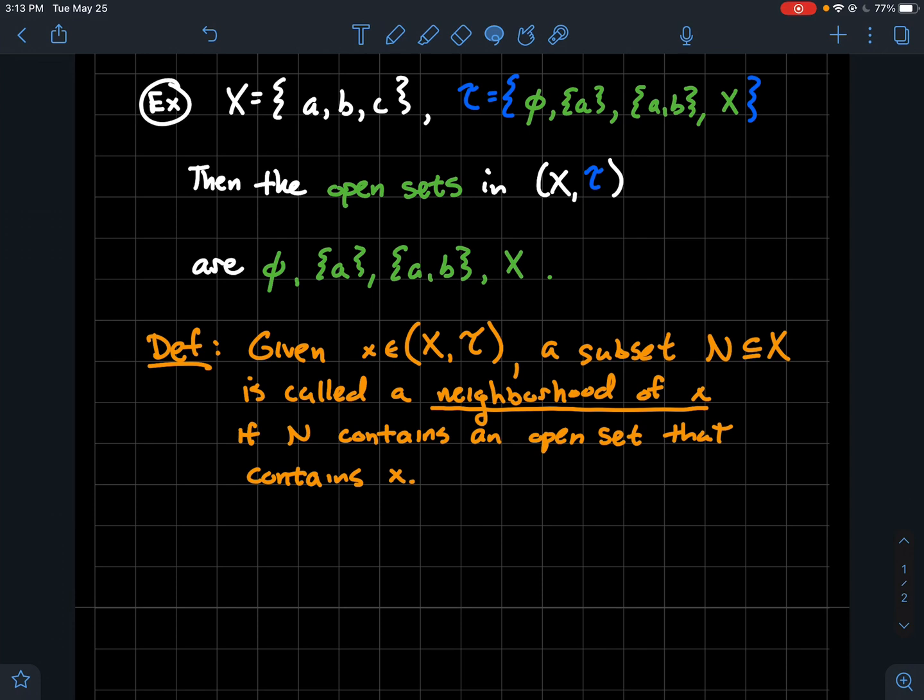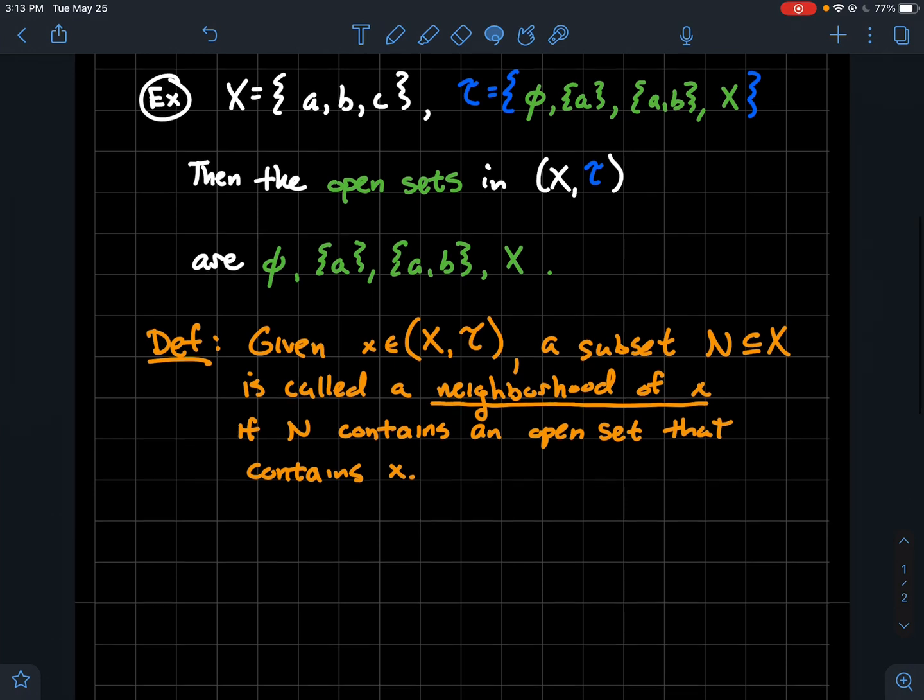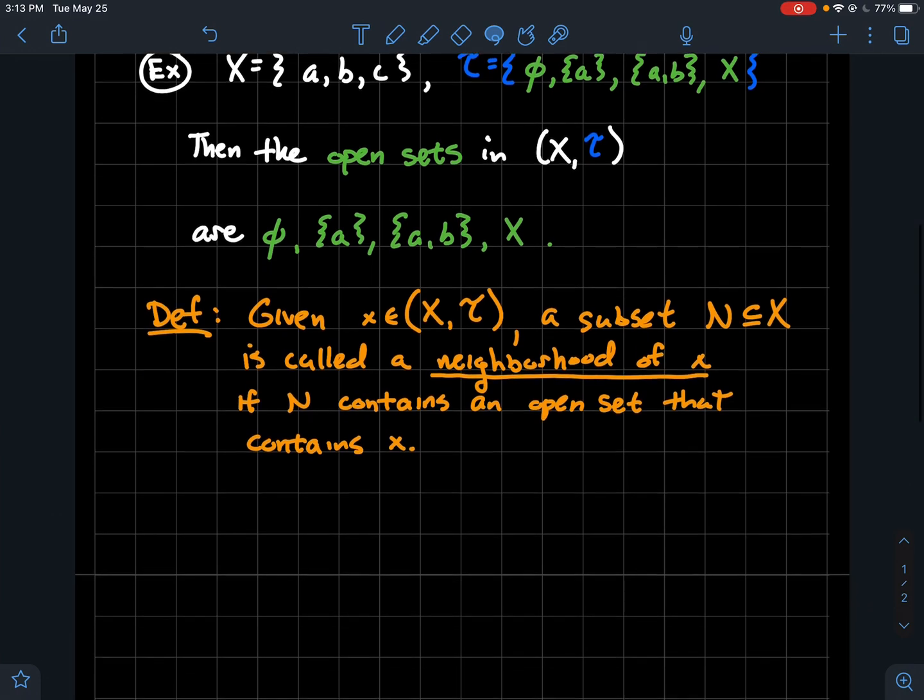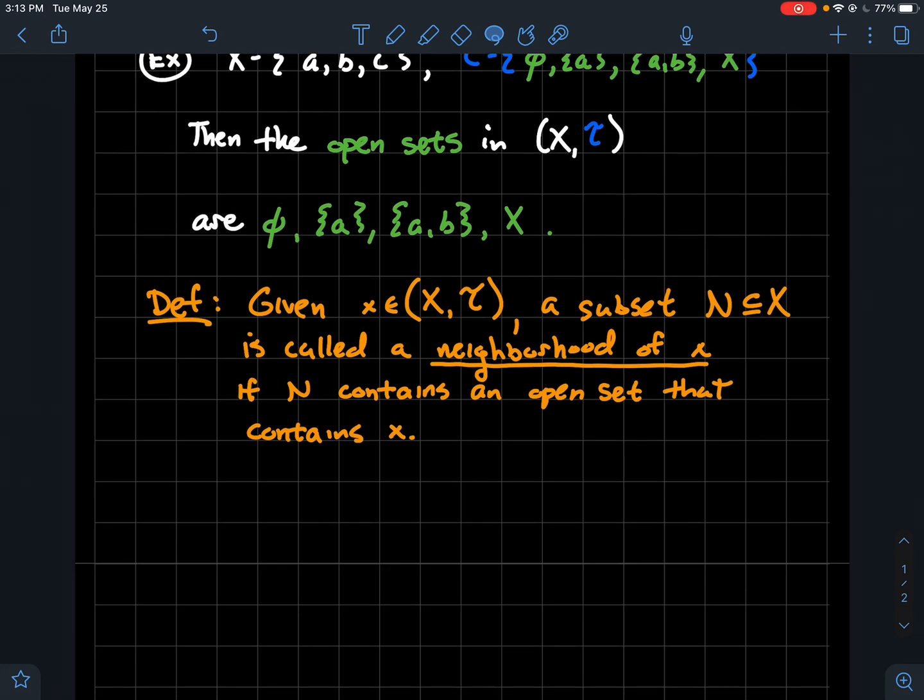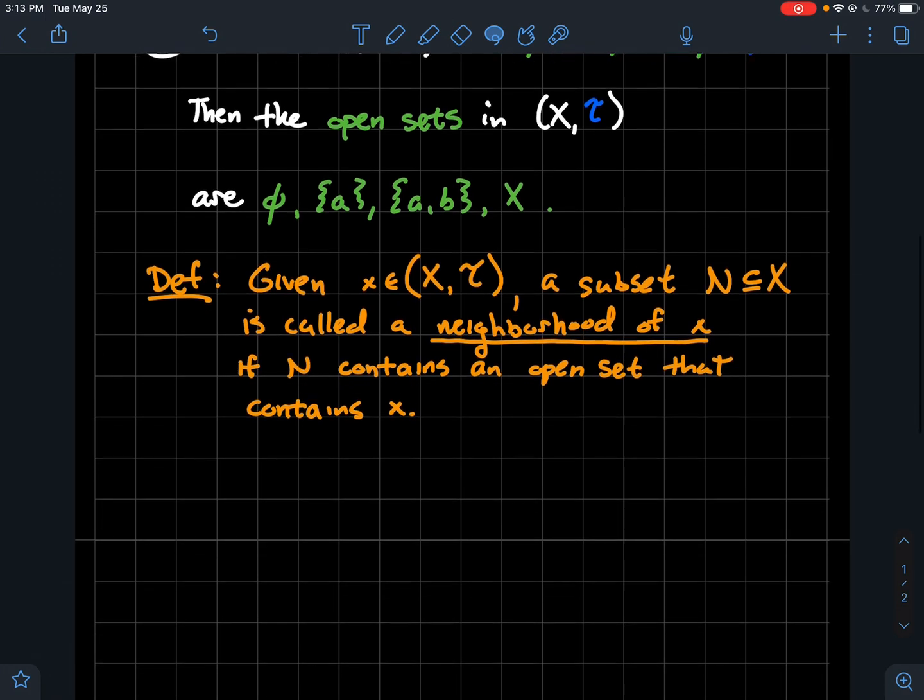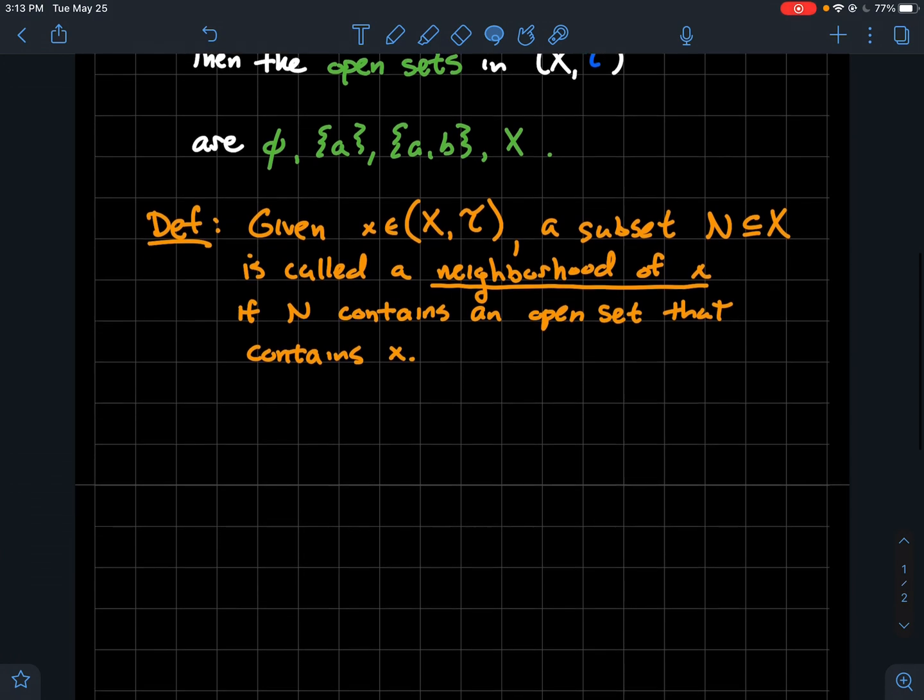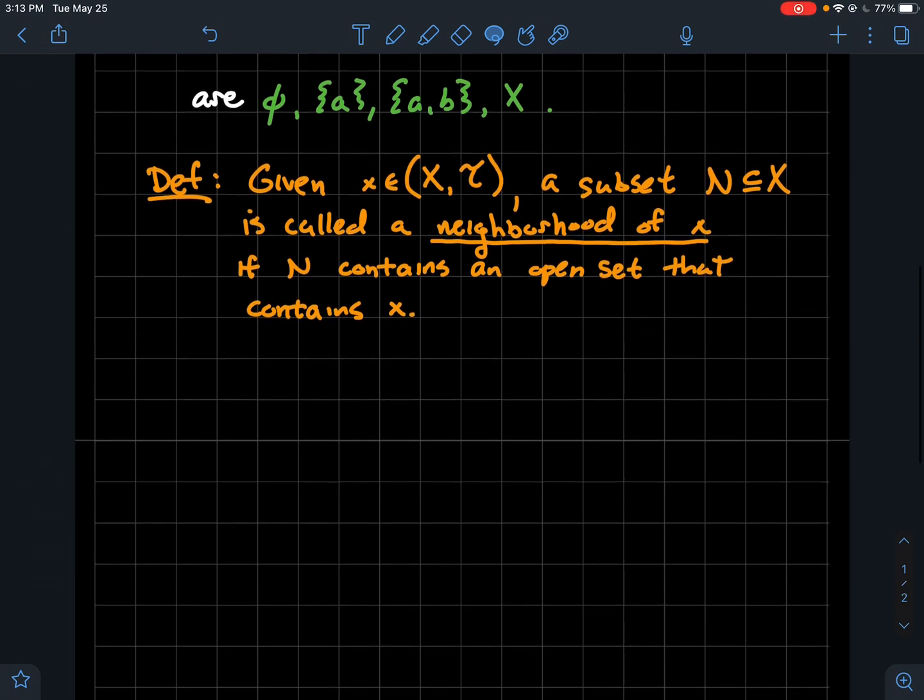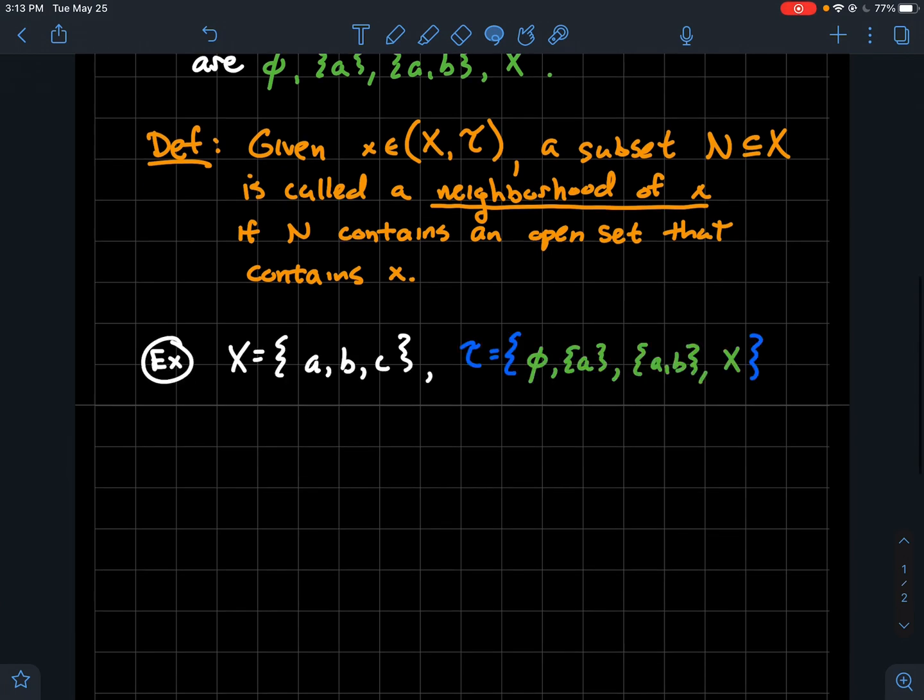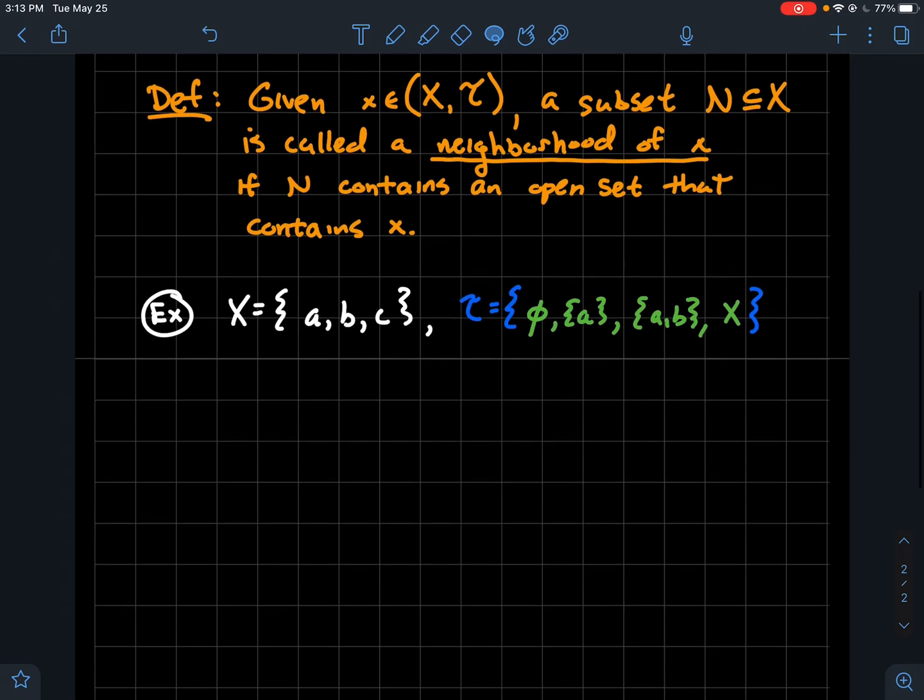So here's kind of the new definition. So that should be old news if you've made it this far. So the new definition is if you're given a point in your topological space, you're given a point in little x, then a subset N of X is called a neighborhood of little x if N contains an open set that contains x. So let's try to do an example that spells out what's going on with this orange definition of a neighborhood.